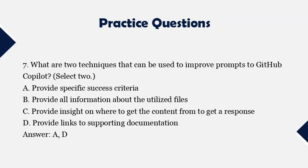Question 7: What are two techniques that can be used to improve prompts to GitHub Copilot? Select two. A. Provide specific success criteria. B. Provide all information about the utilized files. C. Provide insight on where to get the content from to get a response. D. Provide links to supporting documentation. Answer: A and D.